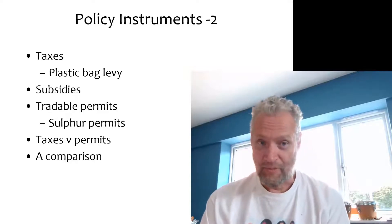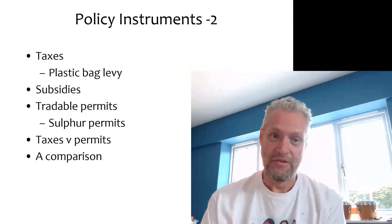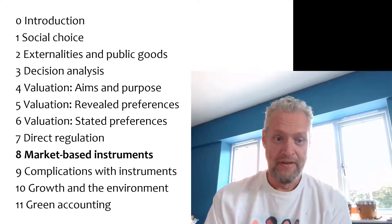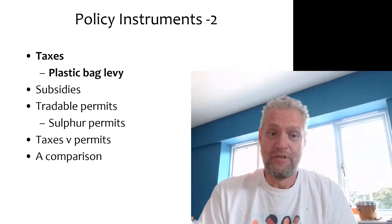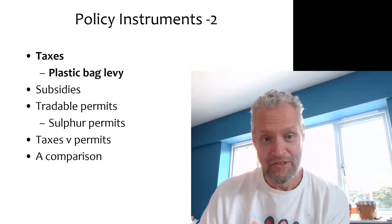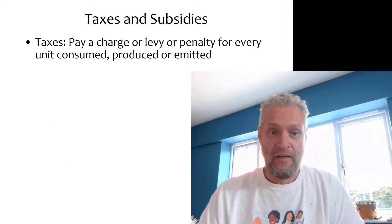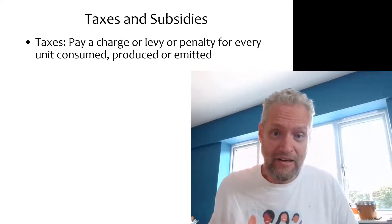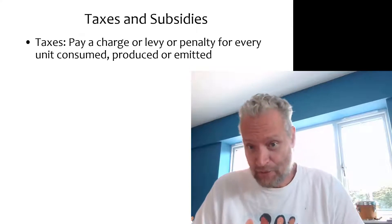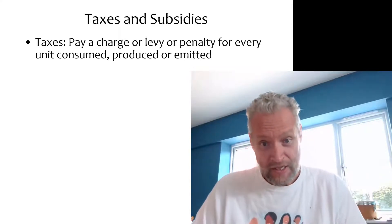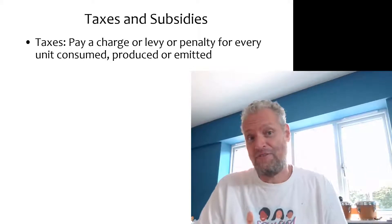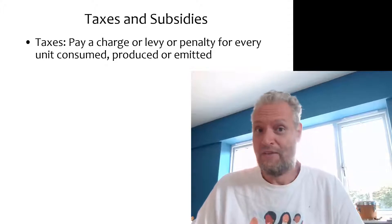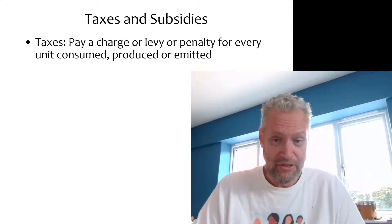We have looked at a number of instruments for environmental policy already, and now it's a turn for the so-called market-based or incentive-conform policy instruments. An environmental tax is essentially a tax on emissions. You pay a charge, levy, penalty, or fee for every unit emitted, and sometimes you can't charge for emissions directly, so the tax falls instead on every unit produced or every unit consumed.